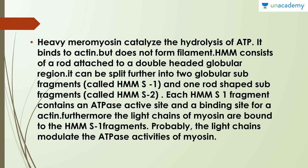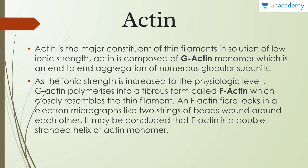Heavy meromyosin (HMM) catalyzes the hydrolysis of ATP and binds to actin, but does not form filaments. HMM consists of a rod attached to a double-headed globular region and can be split further into two globular sub-fragments — HMM-S1 (segment 1) — and one rod-shaped sub-fragment called HMM-S2. Each HMM-S1 fragment contains an ATPase active site and a binding site for actin. The light chains of myosin are bound to the HMM-S1 fragment and likely modulate the ATPase activity of myosin.